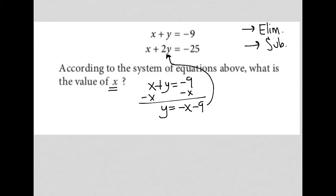which I can then plug into the y value in the second equation. I'd have x plus 2, and in parentheses instead of y, I'd replace that with negative x minus 9, equals negative 25. When I simplify this, x plus 2 times negative x is negative 2x, 2 times negative 9 is negative 18, equals negative 25.